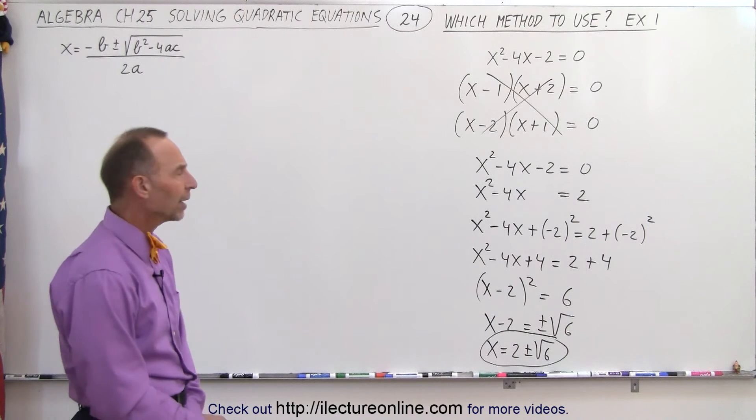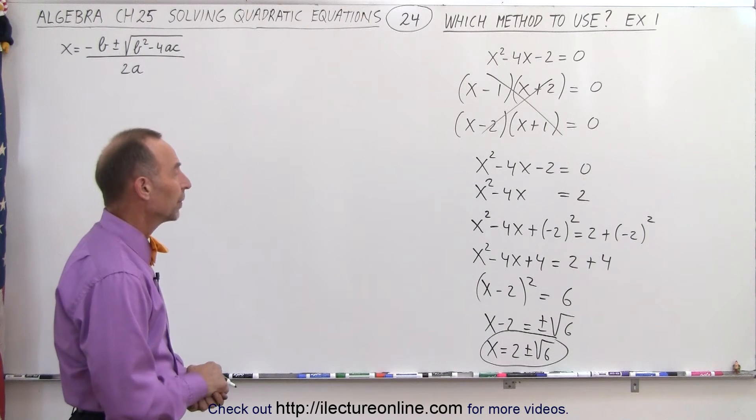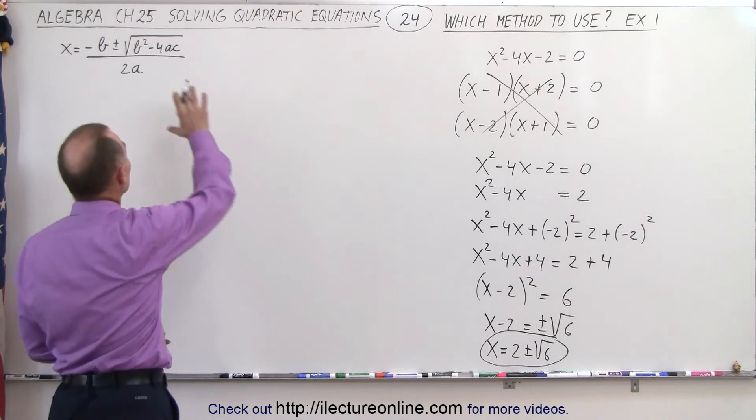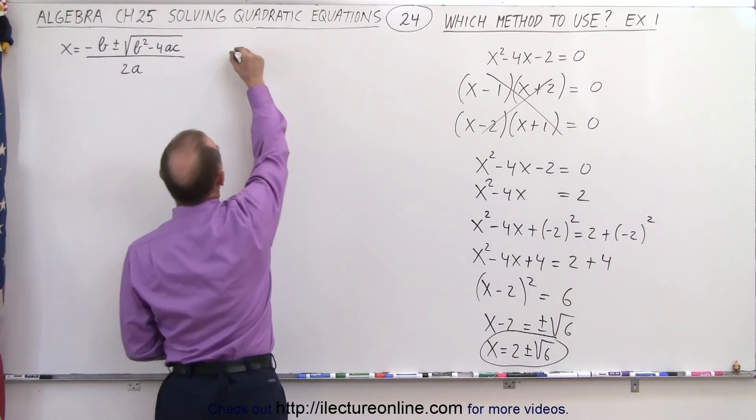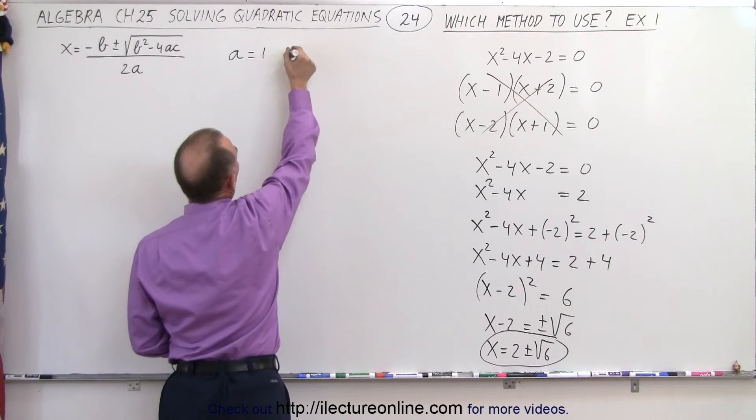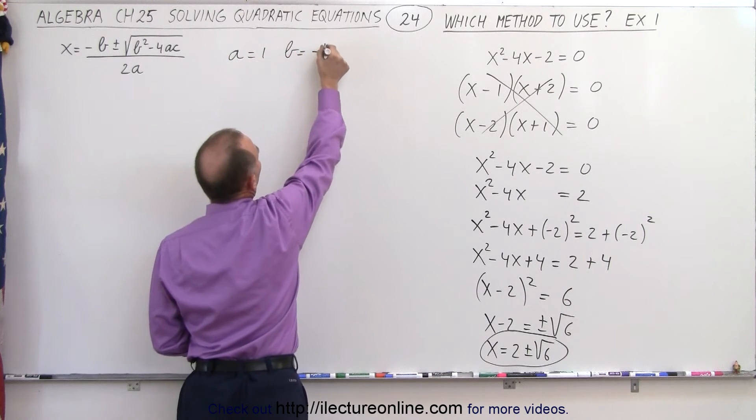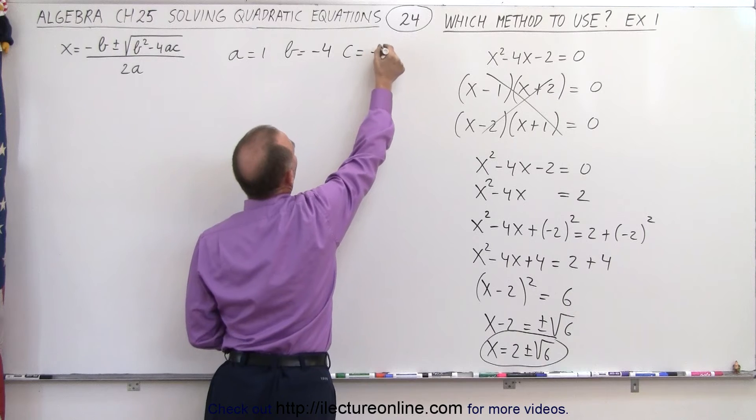So that wasn't so bad during the completing the square method. Now what would it look like if we were to use a quadratic formula? Well first we need to identify a, b, and c. So we have a is equal to one, b is equal to negative four, and c is equal to negative two.